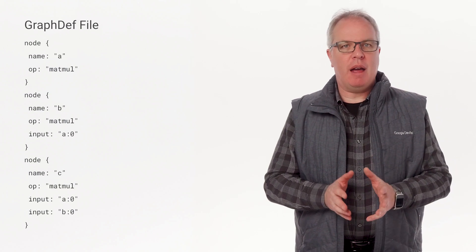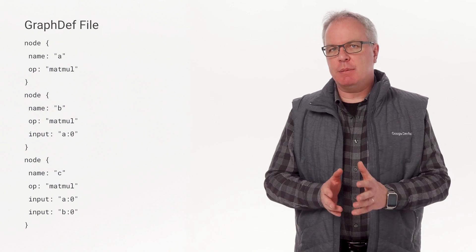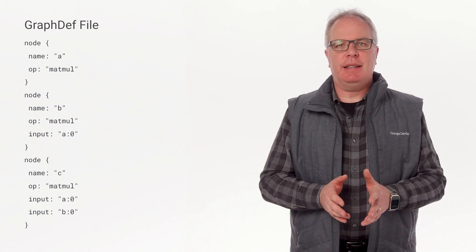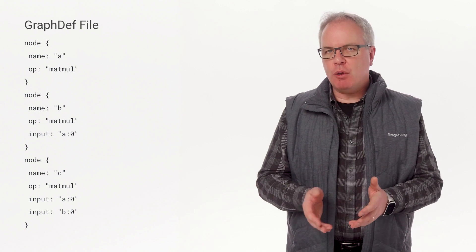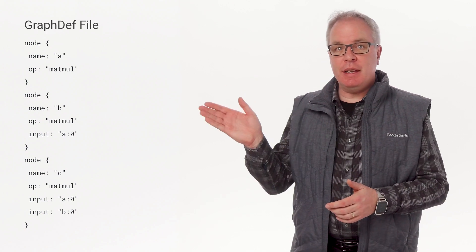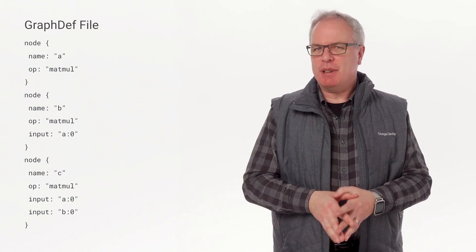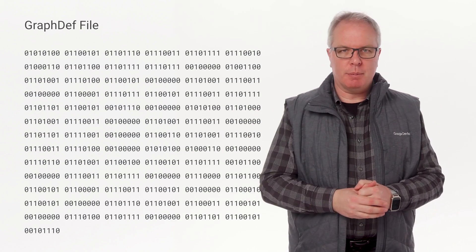The first of these is a graph def file, which will have the .pb extension if it's binary, or .pbtxt if it's in text format. While the text format, as you can see on this slide, is designed to be human readable, it's also very verbose and not as size or memory efficient as its binary counterpart.